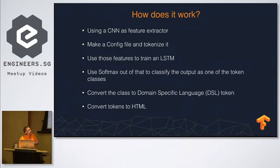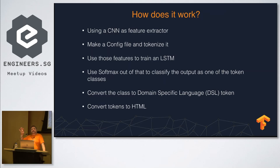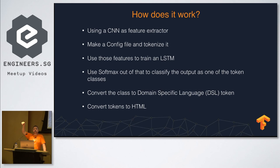The CNN acts as a feature extractor — it looks at the hand-drawn image and determines the key features. We also make configs, tokenize them, and feed both into the model to train an LSTM. As output, we use a softmax to predict the next token based on what we've seen already — this is where it becomes a classification problem.